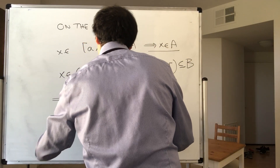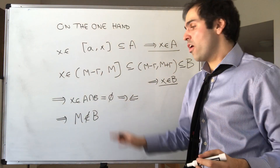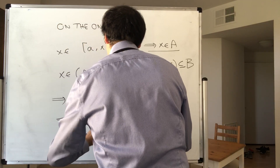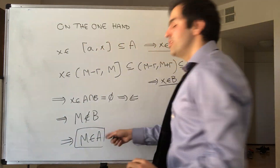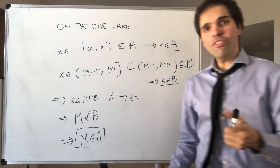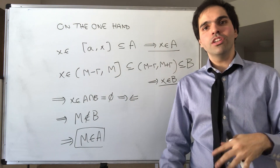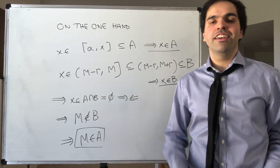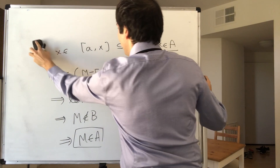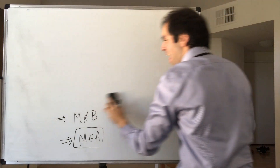So M is not in B, but because A union B is all of ℝ, this implies that M is in A. In fact, the contradiction will be that M is not in A. However, in order to do that, we'll do a couple of intermediary steps. Before showing that M is not in A, let's actually show that M is in S. So step 3.